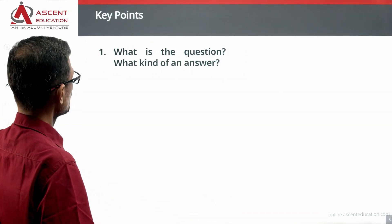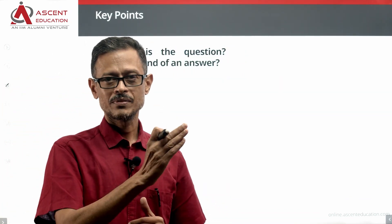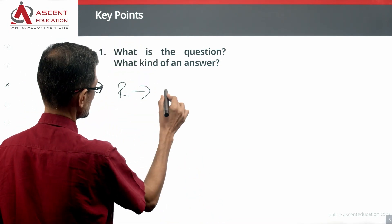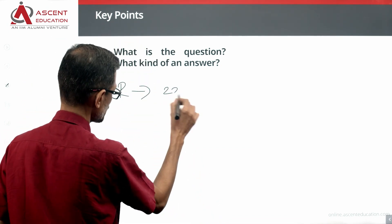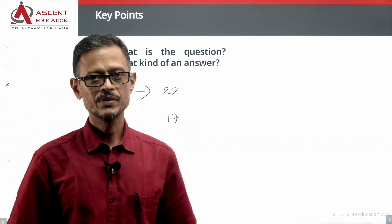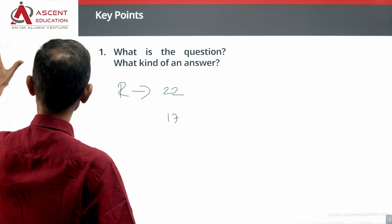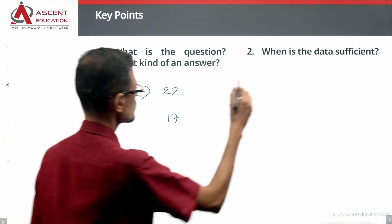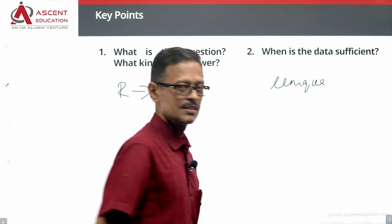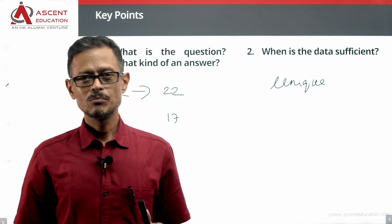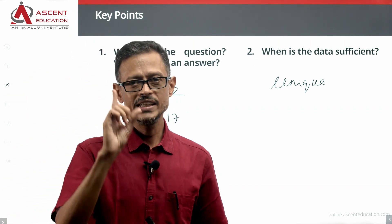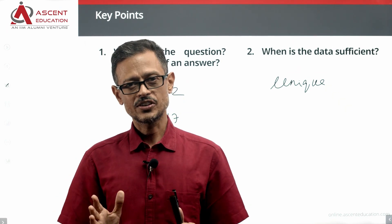What kind of question is this? We need to find the rank of R from the bottom. The data is sufficient when the rank of R from the bottom is a unique number — for example, 22 or 18. If we can determine one unique rank number, then the data is sufficient.